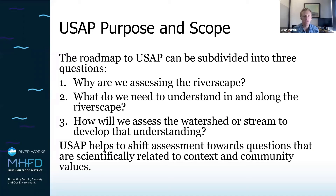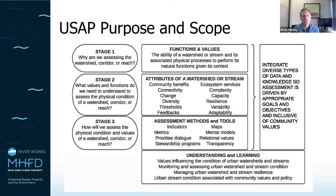The roadmap to urban stream assessment is divided into three questions: Why are we assessing the riverscape — using riverscape as a general term for watershed, stream corridor, or reach? What do we need to understand in the long run? And how do we assess that watershed or stream to develop that understanding? This figure goes into more detail on those three questions, couched into three stages: stage one looks at function and values, stage two looks at the attributes or context, and stage three covers how to go about doing the assessment.